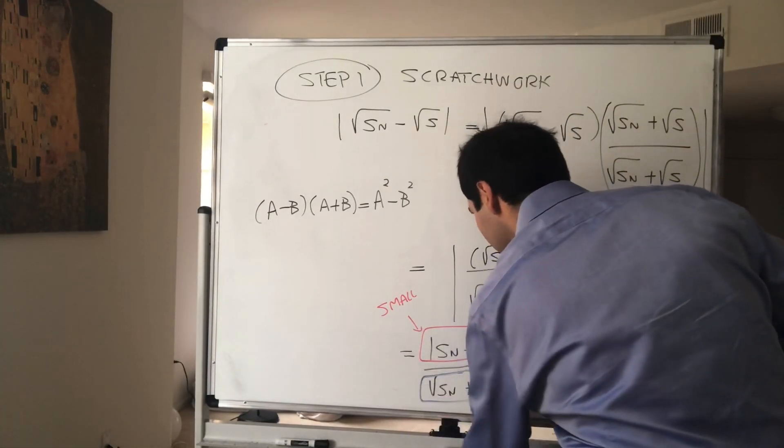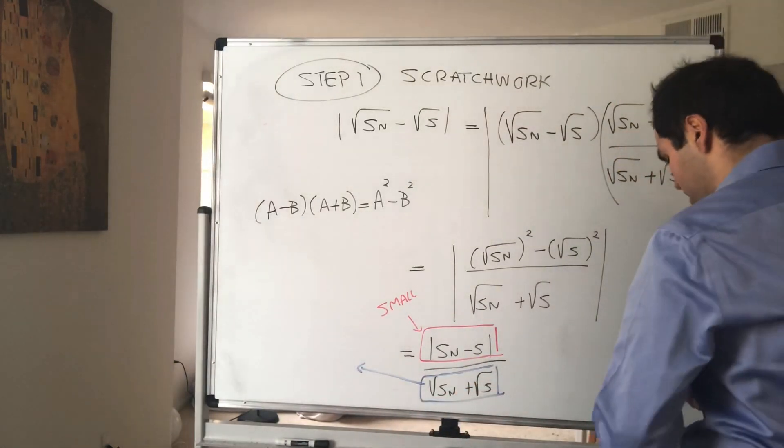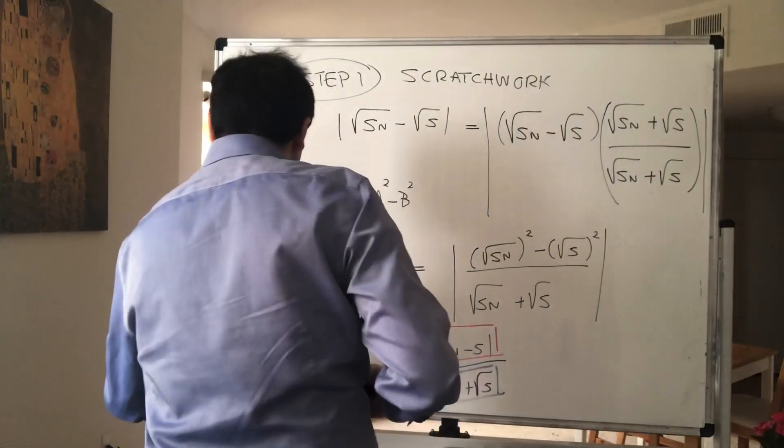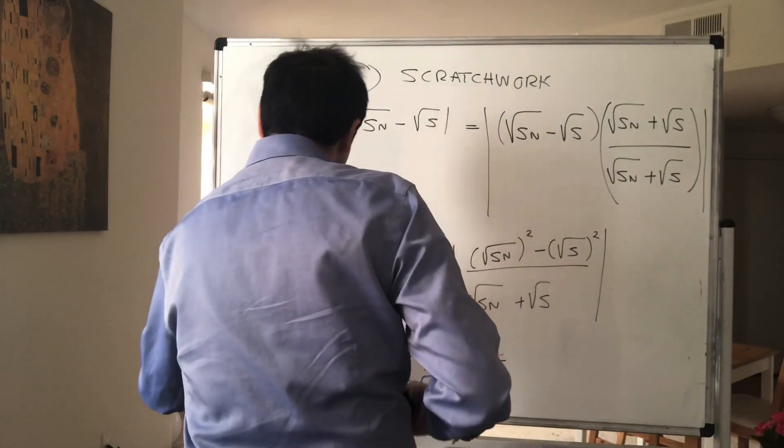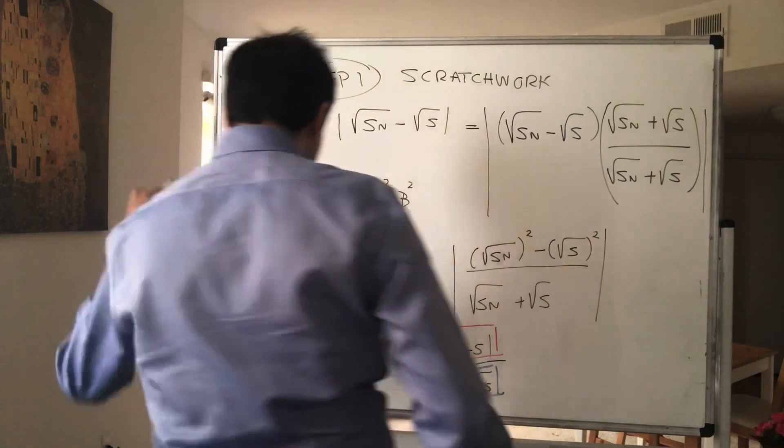what we want, we actually want this to be bigger than a certain number. So square root of Sn plus square root of s, what we want, we want this to be greater than or equal than some other number that does not depend on n.